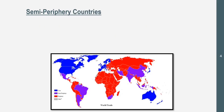Now let's get into semi-periphery countries. Looking at the map, we can see examples like Argentina, Brazil, Mexico, South Africa, Iran, India, China, Taiwan, South Korea, and Indonesia — those are the main semi-periphery countries observable on this map.